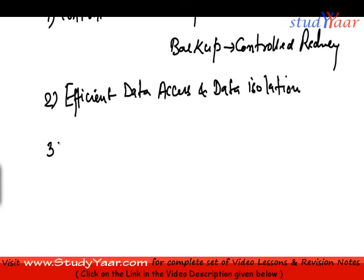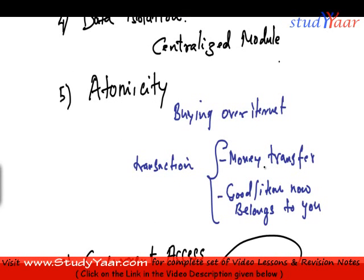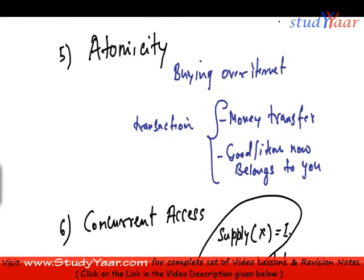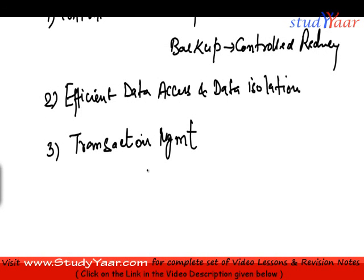The third advantage is transaction management. We talked about what a transaction is and the atomicity property — that every logical piece of work should be done such that either the entire thing is done or nothing is done. Like in the previous example, either you transfer the money and ship the item, or you don't do anything. It shouldn't happen that money is transferred but the item is not shipped.